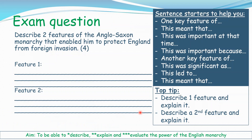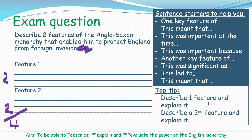We've got a brief exam-style practice question for you. Describe two features of the Anglo-Saxon monarchy that enabled it to protect England from foreign invasion. It's four marks in total - feature one is two marks and feature two is two marks. There are some sentence starters here to help you and some top tips. Pause the video, have a go, and come back.